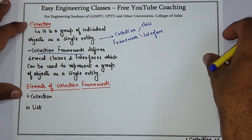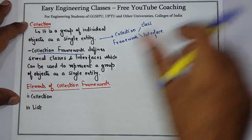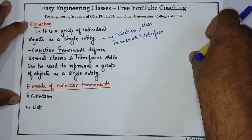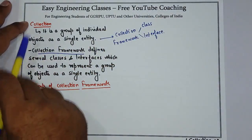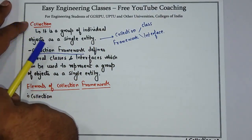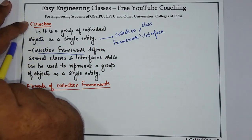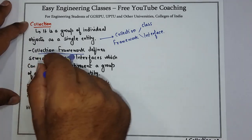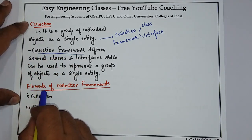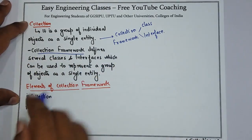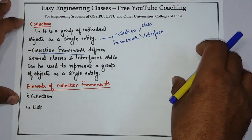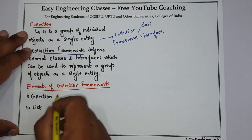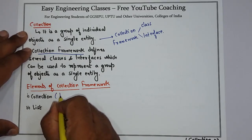Hello students. In this lecture we will see about the elements of the collection framework. In the previous lecture we have seen the disadvantages of arrays, advantages of collection, and the definition of collection and collection framework. Now we will cover the different elements of the collection framework. The first element is collection, which is an interface.